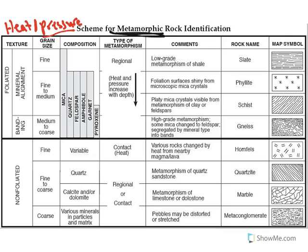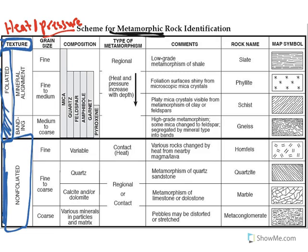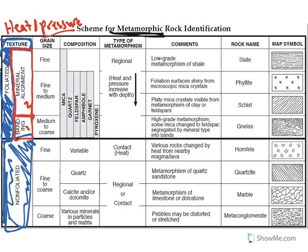Now there are two types of metamorphic rocks: there's the foliated and there's the non-foliated. Today I want us to focus on the texture — the difference between foliated and non-foliated. In the foliated category, there are two types of foliations: the first type is banded or banding, and the second type is mineral alignment. Everything else is considered non-foliated.